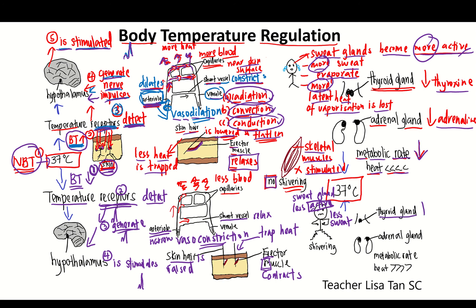Thyroid glands will secrete more thyroxine. Adrenal glands will secrete more adrenaline. So our metabolic rate increases and more heat will be generated. But if you are still cold, your body will trigger shivering — the skeletal muscles are stimulated to contract rapidly, and this causes shivering. Shivering is the last measure to bring your body temperature back to 37 degrees.